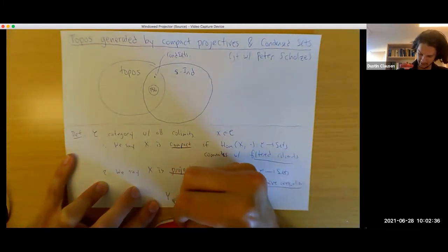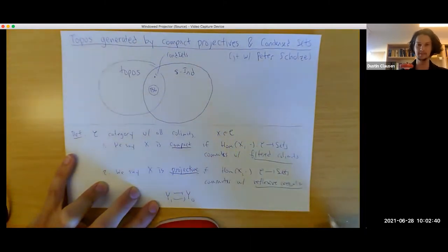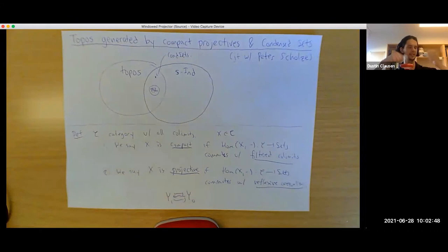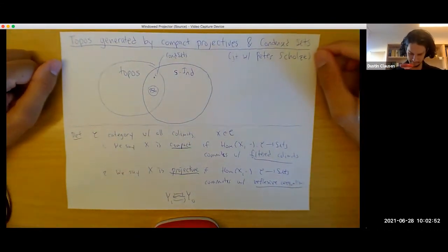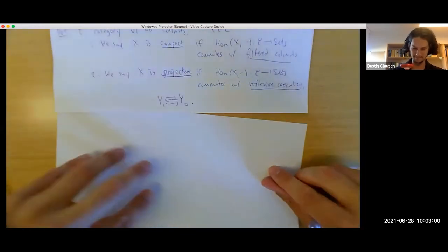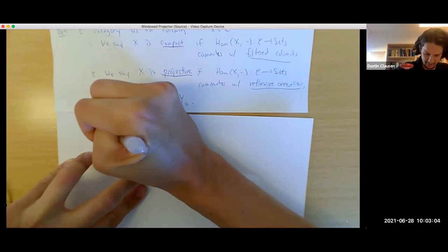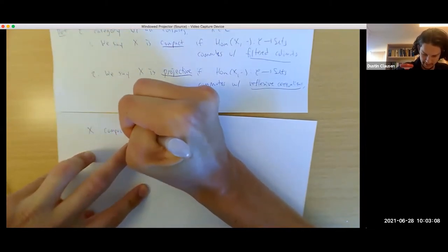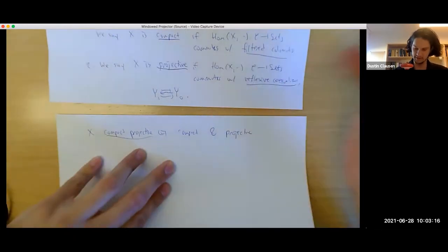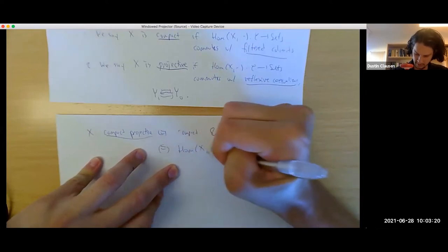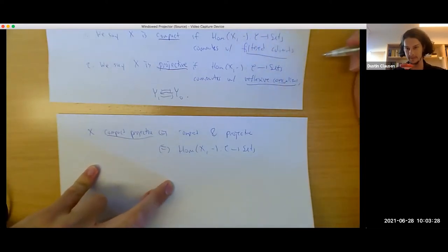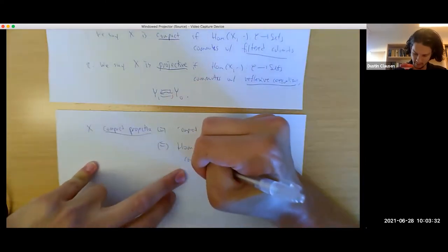We say X is compact if Homs out of X commute with filtered colimits. We say X is projective if Homs out of X commute with reflexive coequalizers. A coequalizer is reflexive if there's a common splitting for the two maps being coequalized. That might seem a little weird at first sight, but there's a method to the madness. X is compact projective if and only if it is compact and projective, which is equivalent to saying Hom out of X commutes with sifted colimits.